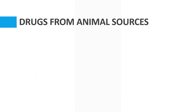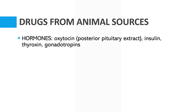The first part of our lesson will talk about drugs from animal sources. The first group are the hormones, which are used not only in humans but also in veterinary medicine. Examples include oxytocin, derived from the posterior pituitary gland, as well as insulin, aroxin, and gonadotropins.